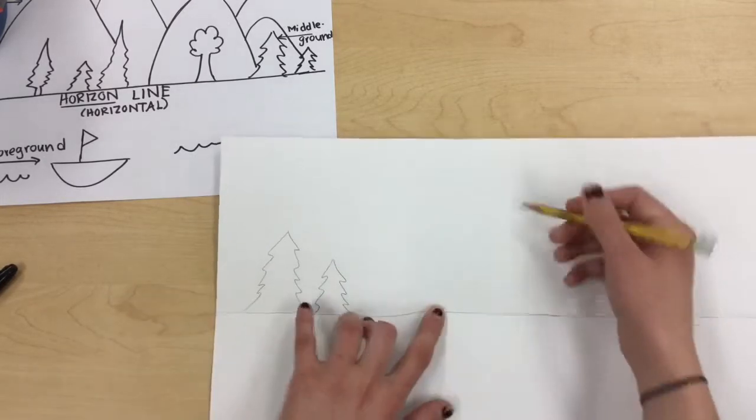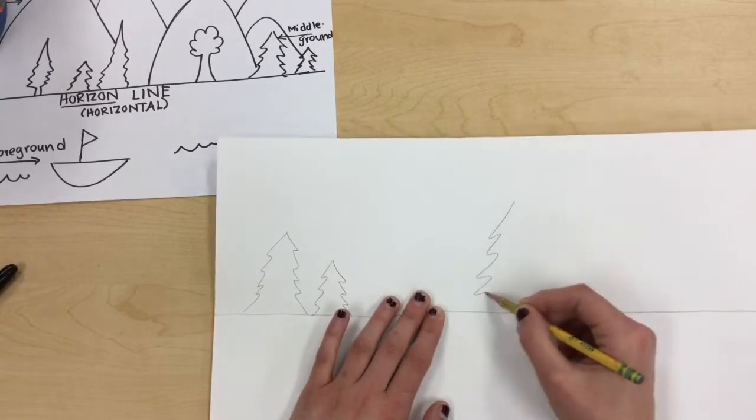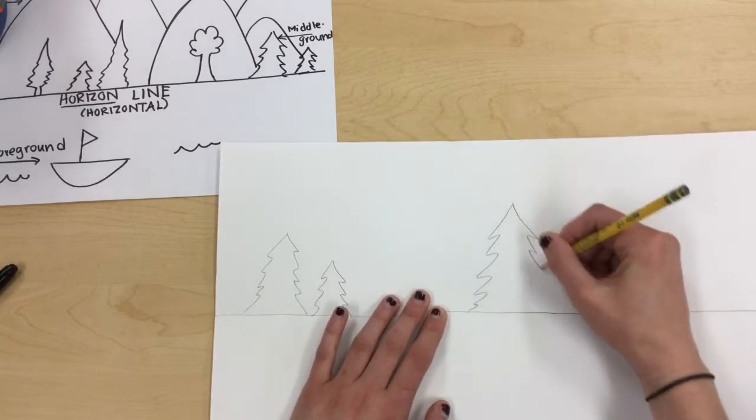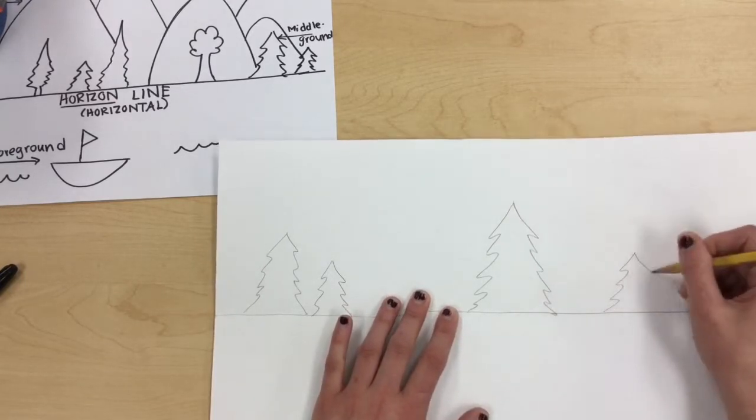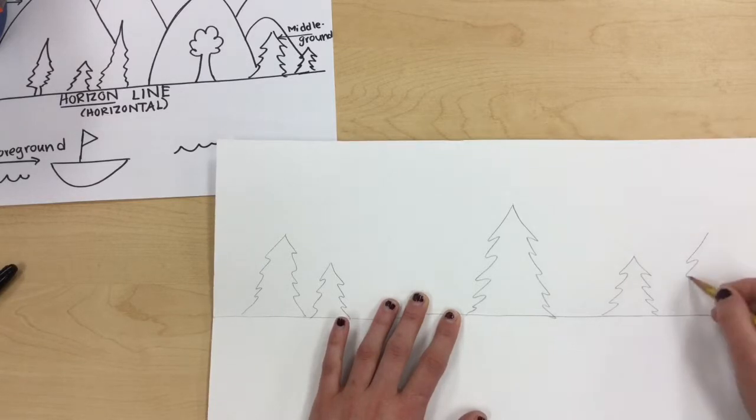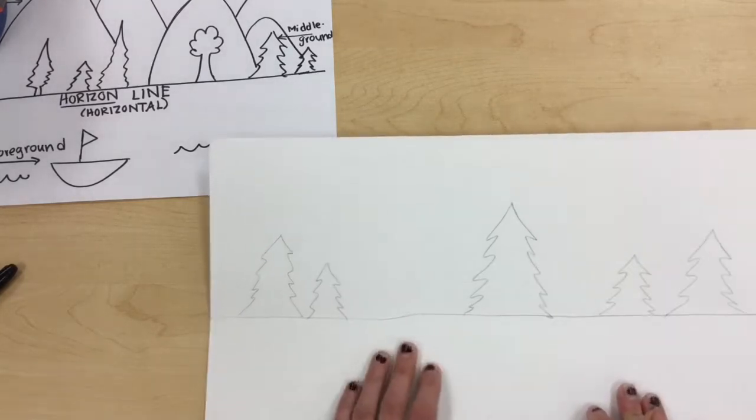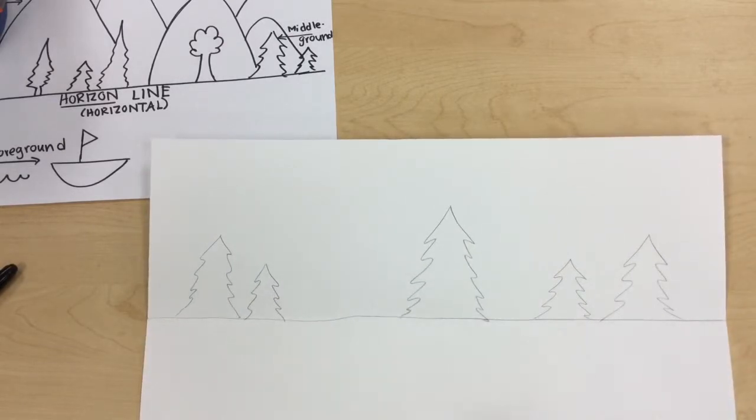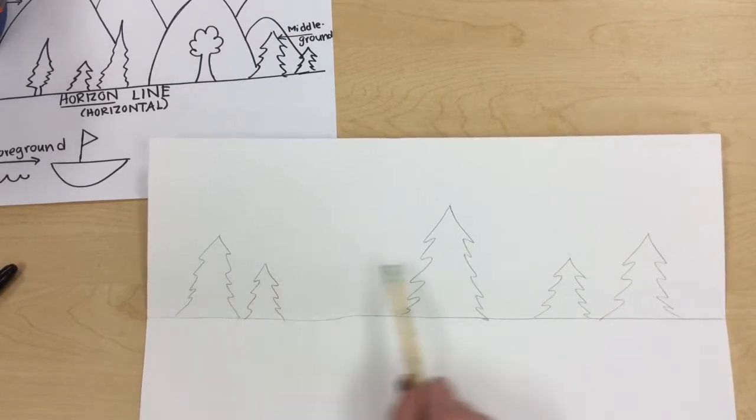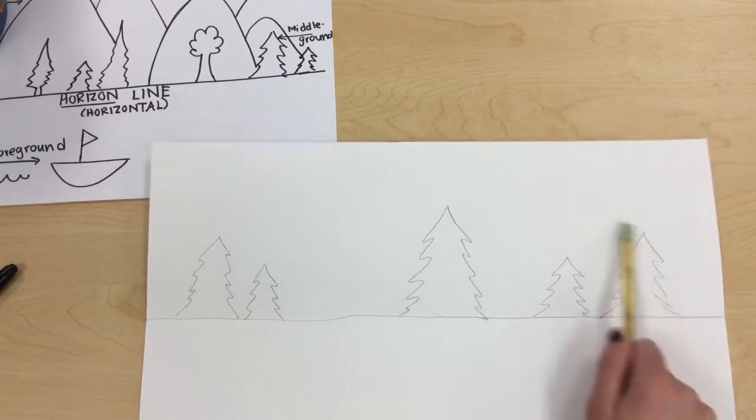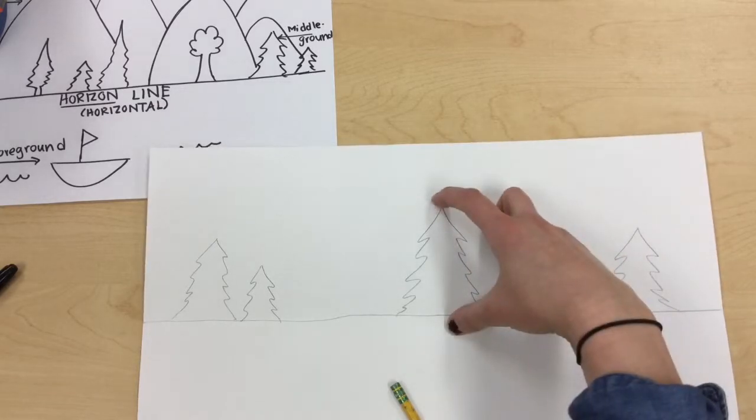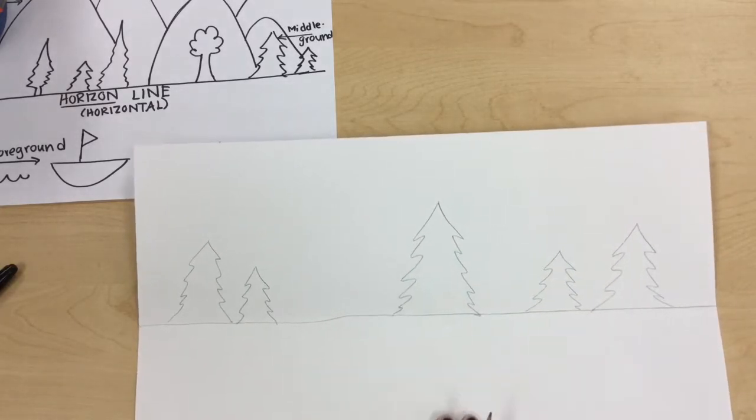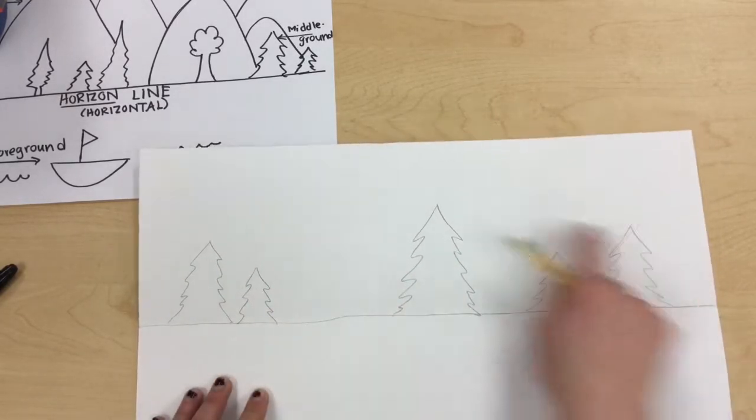Whatever way you want to draw them, make sure you're using different sizes. That's for some variation. That's a principle of art. That makes your art more exciting. If it's all the same, it's usually not that exciting. So I have drawn my five trees and you can see mine are all the same design but they're all different sizes. Some are bigger, some are smaller, some are really big. So it's up to you on how you want to design your middle ground today.